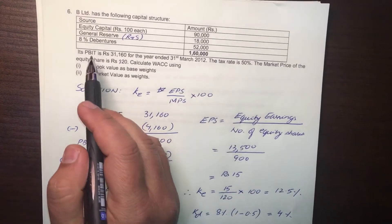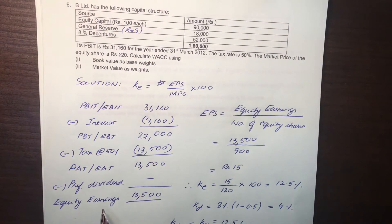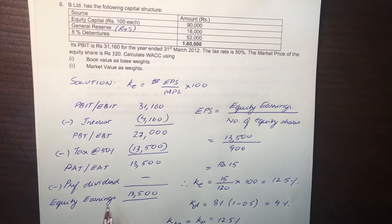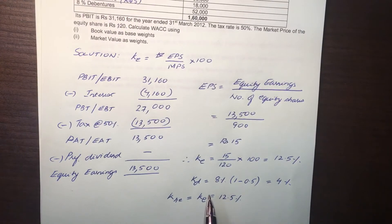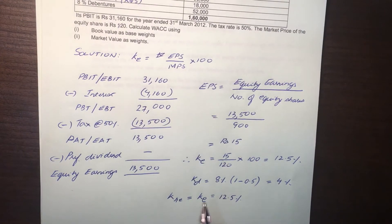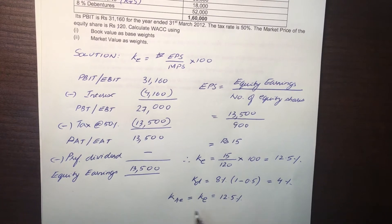Just because it is internal equity — just because the money comes from equity earnings and not from a loan or by issuing new equity shares — does not mean it is free. There is a cost because you are using equity shareholders' money, and we assume that cost is equal to the cost of external equity.